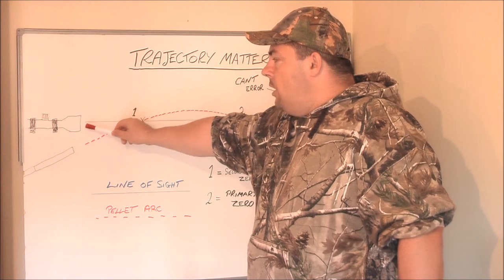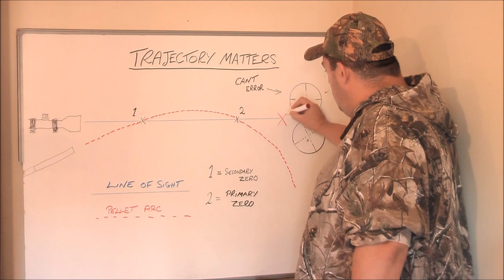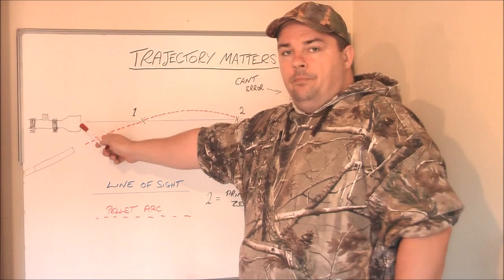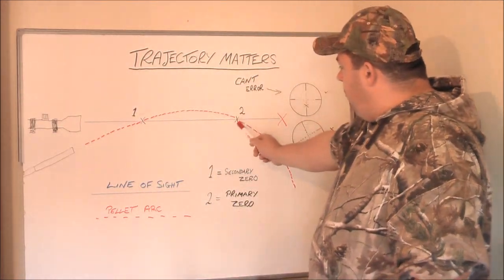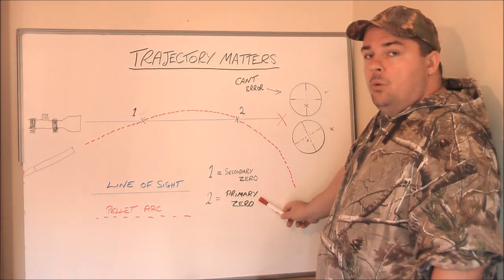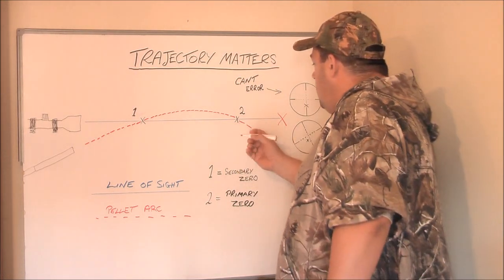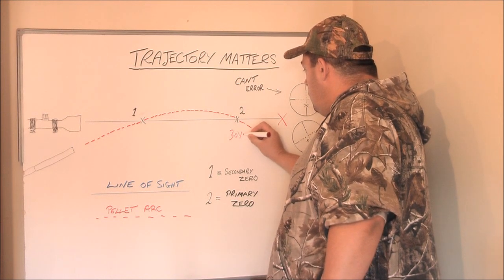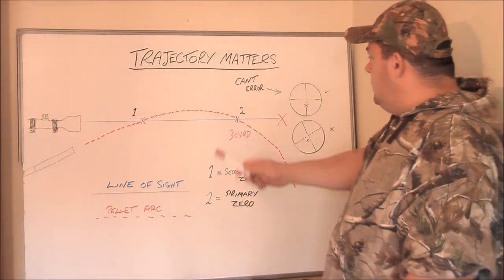So the line of sight between you and your target which is here is a straight line. However, for the pellet or bullet to reach here number 2 which is known as your primary zero. Assuming this is, lets say its 30 yards. 30 yards right, your primary zero.